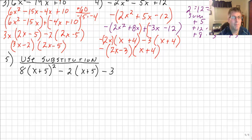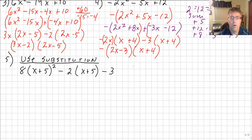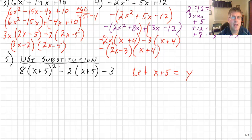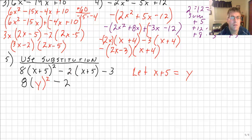Finally, a different kind of problem. You might be tempted to FOIL this or use your patterns and multiply — and it will work — but I'm going to require you to use the substitution method. Let's let (x + 5) equal y. We'll replace (x + 5) with y, giving us 8y² − 2y − 3.